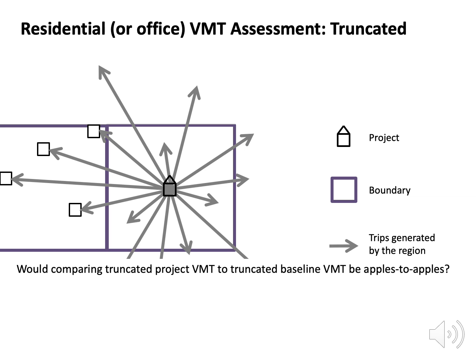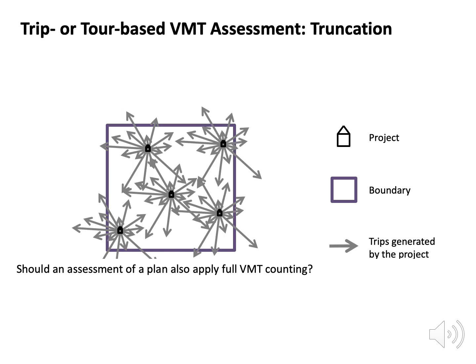But why can't truncated project VMT be compared to truncated baseline VMT? Wouldn't truncated to truncated be an apples to apples comparison? Technically it would be an apples to apples comparison, but it would still be biased. Again, truncation and discounting tilt the playing field, creating a permissive bias for outlying development and a restrictive bias for infill. So projects should assess full trips, and full trips should be assessed when developing a threshold that would be applied to a project.